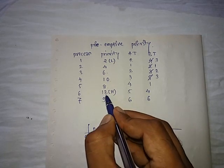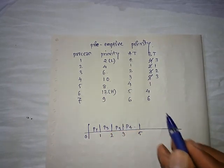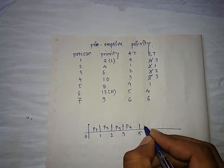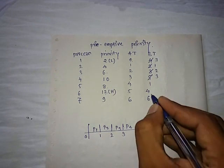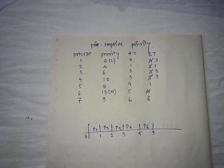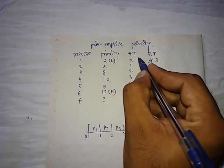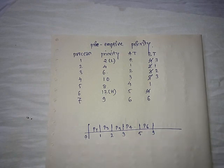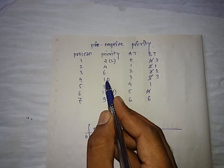The P5 process has the highest priority, so we check scheduling. We schedule P6 until its completion: 5 plus 4 equals 9, and P6 is removed from the system. By this point we have covered time units 0 to 9, and all arrival times for all processes are included in that range. Now we can directly schedule the remaining processes according to their priorities.